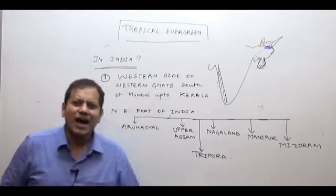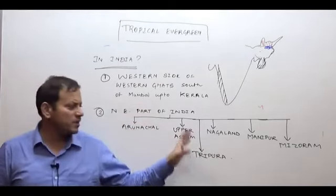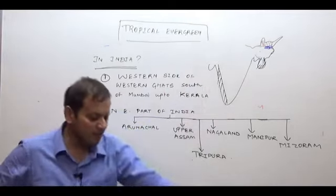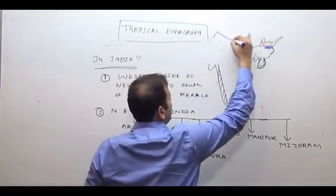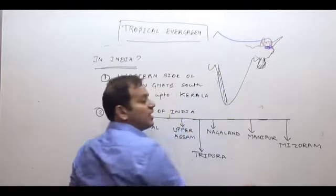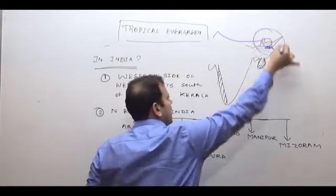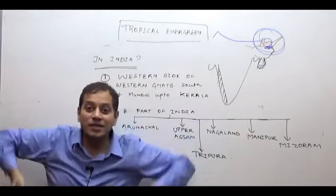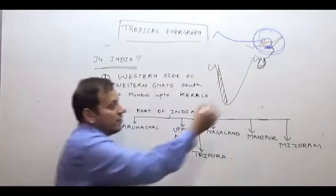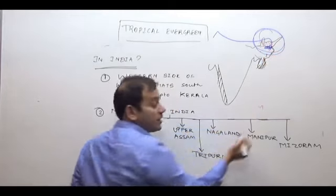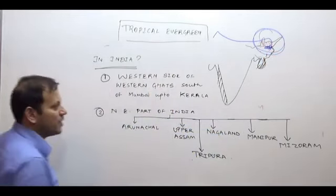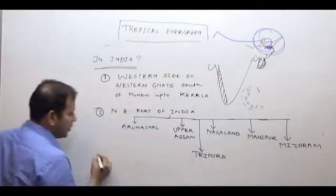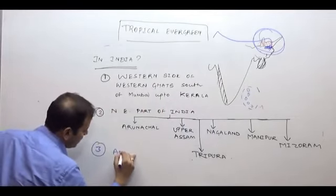To remember this data: Arunachal Pradesh is in the Eastern Himalayas. When I say Nagaland, Manipur, Mizoram — that means the Purwanchal Hills or Eastern Hill Complex, from the Patkai to Lushai Mountains. The third region, and one of the most important biodiversity hotspots, is the Andaman and Nicobar Islands.